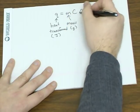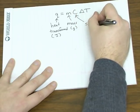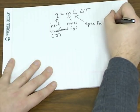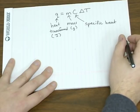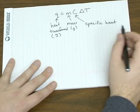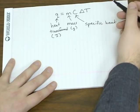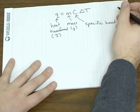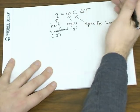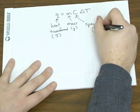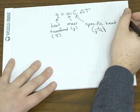M is the mass in grams. C is the specific heat, which is the amount of heat required to raise the temperature of one gram of a substance one degree. It's a constant but it varies from substance to substance, and it's in units of joules per gram degree.